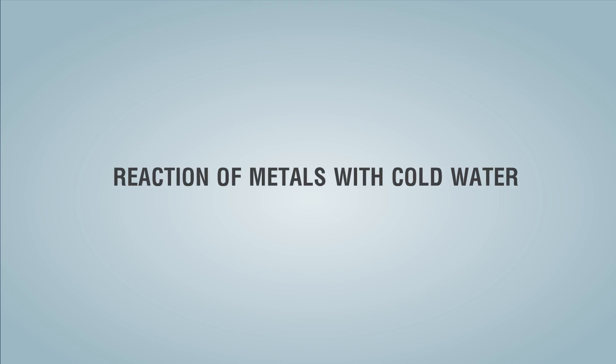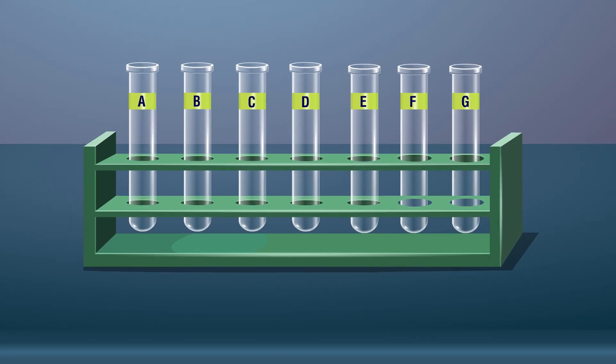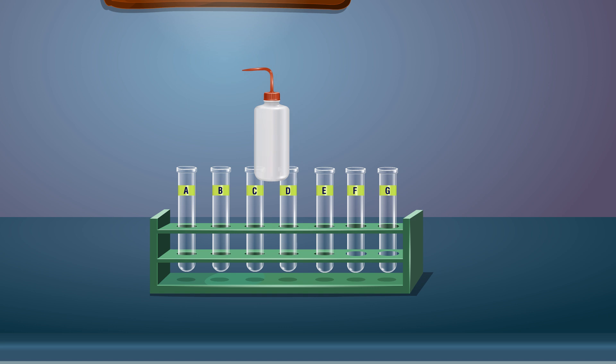Procedure: Reaction of metals with cold water. Take seven test tubes labeled A, B, C, D, E, F, and G, half-filled with cold water.